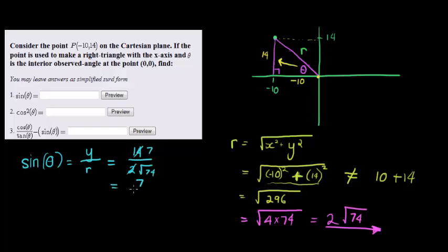Next question: cos squared theta. Not more difficult really. Cos squared theta simply means cos theta is being squared. So in other words it's x over r being squared, where x is equal to negative 10 and r is equal to 2 times the square root of 74.